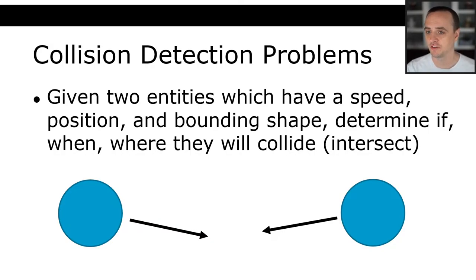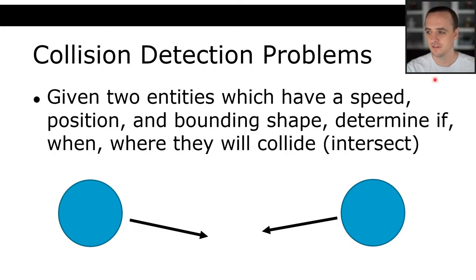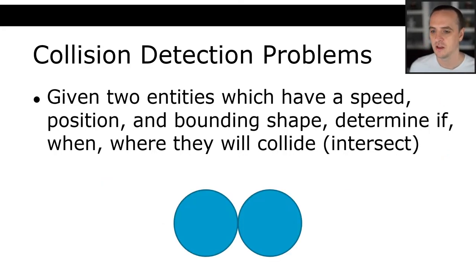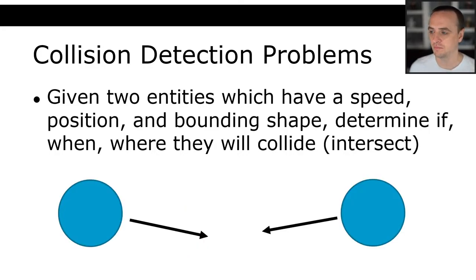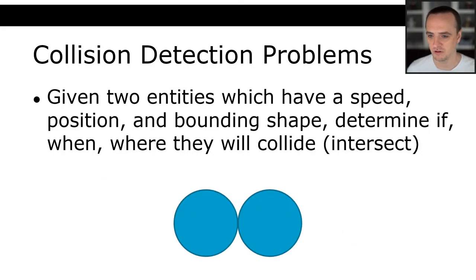There are many different collision detection problems in games, and some games may have a much more complex collision detection problem than we will deal with in this course. For example, some games may say: given two entities with a speed, position, and bounding shape, determine if they overlap, or when they overlap, or where they will collide. We are not going to be doing that in this course — this is a more complex problem not needed for the games we're programming.